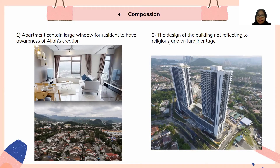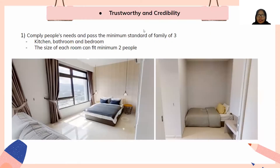The second point under compassion is that the building design does not reflect religious or cultural heritage, as it follows a modern contemporary design with no religious patterns. Under trustworthiness and credibility: the house complies with the minimum standard for a family of three, containing a kitchen, bathroom, and bedroom, allowing residents to cook, bathe, and sleep.